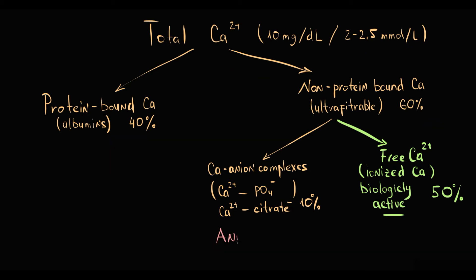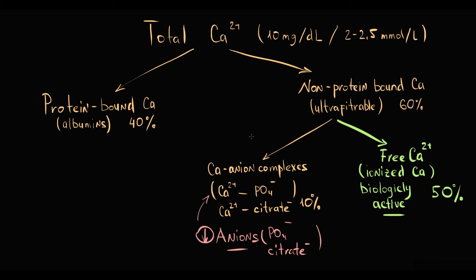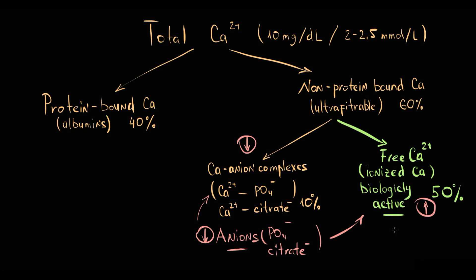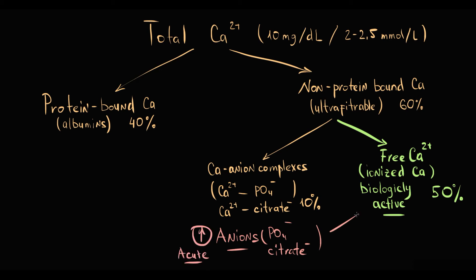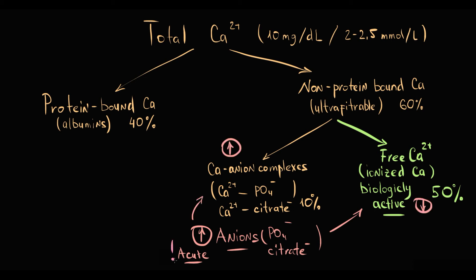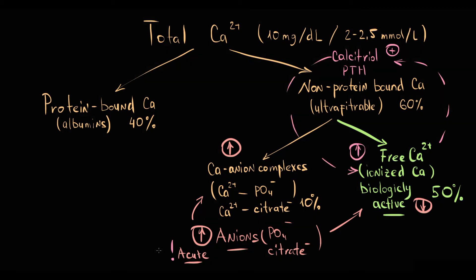Another factor is anions in the blood, because anions bind to ionized calcium with formation of calcium-anion complexes. So an increase in anion level causes a decrease in ionized calcium concentration, and a decrease in anion concentration causes an increase in ionized calcium. In contrast to proteins, anion concentration changes more rapidly. So with an acute increase in anion concentration, the organism does not have enough time to rapidly increase secretion of parathyroid hormone or calcitriol, and the level of ionized calcium will be low during that time period.